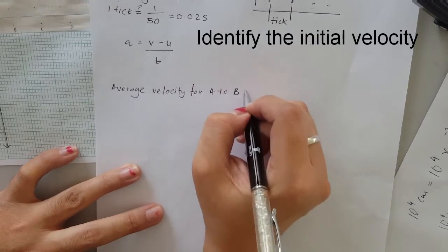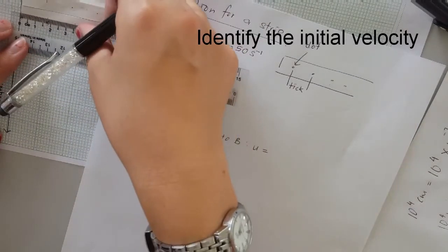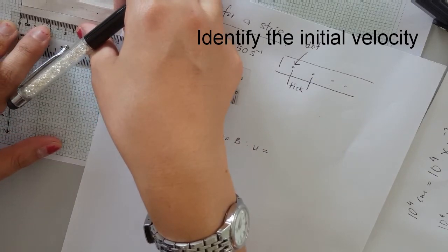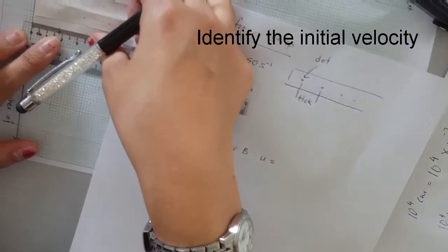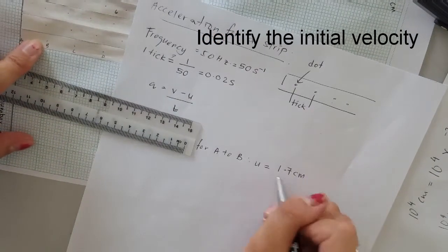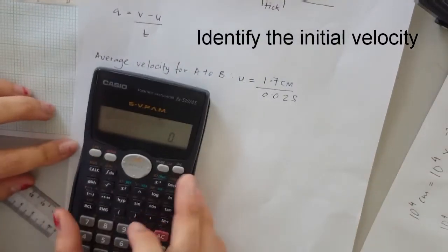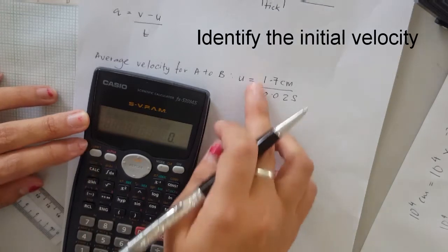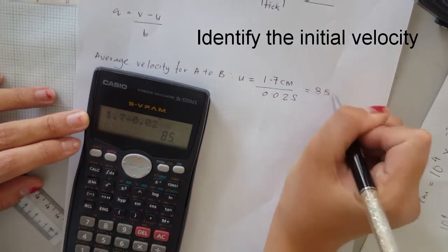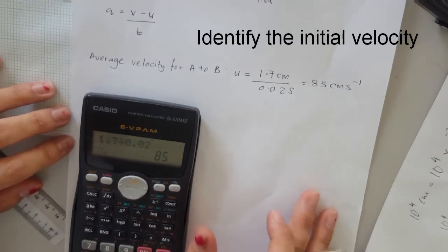For A to B, which is actually u, I have to measure this distance. I'm going to measure from here to B, that is actually in between 1.77, so I'm going to take the reading as 1.7 cm. From A to B is one tick, so one tick value is 0.02. I have a calculator here. 1.7 divided by 0.02 seconds would be 85 centimeter per second. That's the average velocity for A to B, the initial velocity.